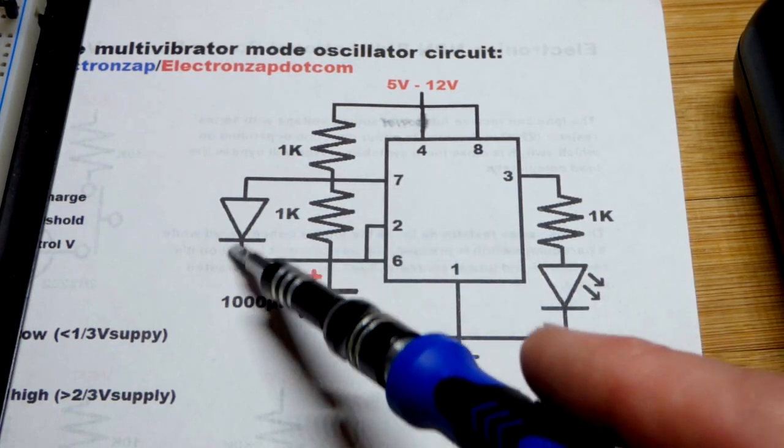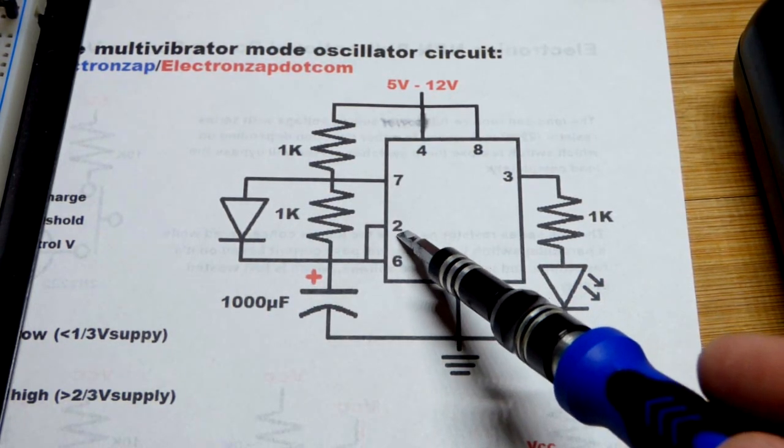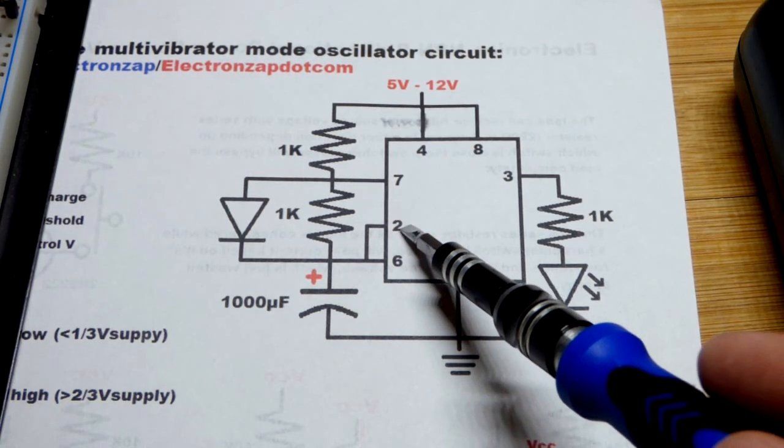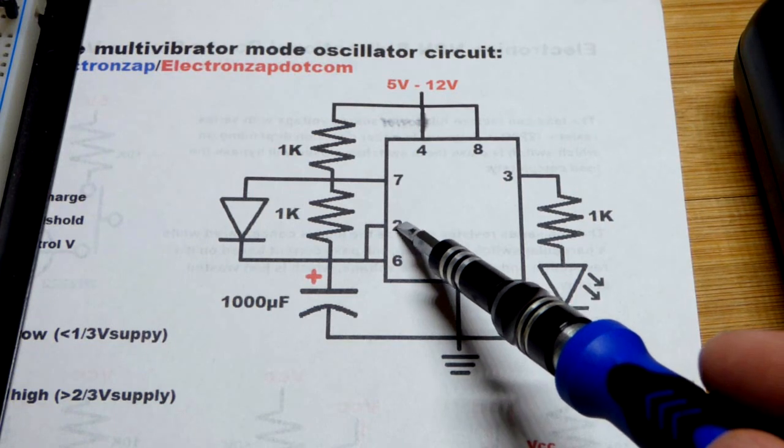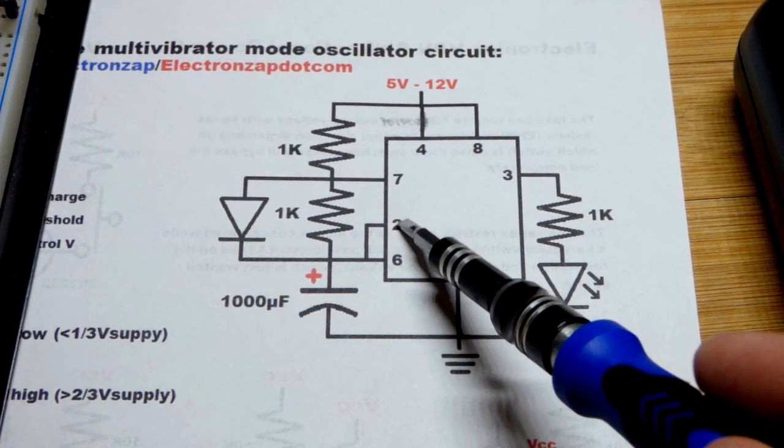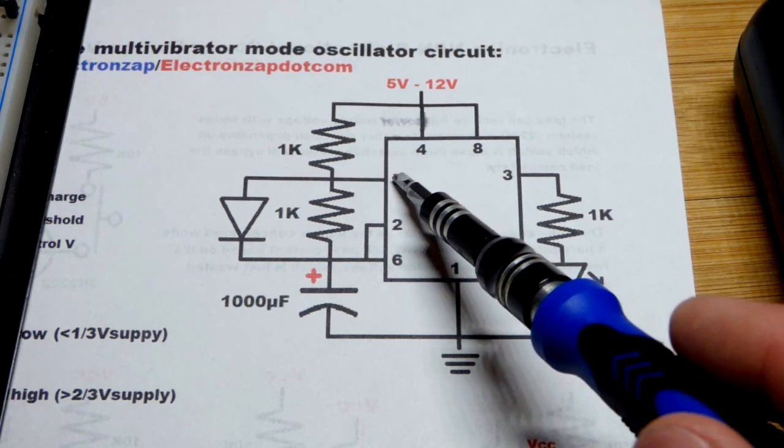It discharges through a resistor because it cannot go through the LED. It discharges until it gets to one-third of the supply voltage. That's what pin two detects. Once it hits one-third supply voltage, then pin number two senses that.